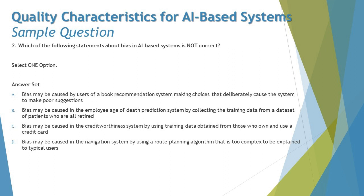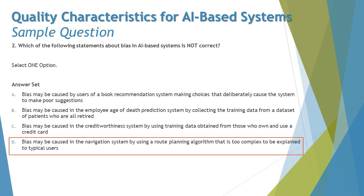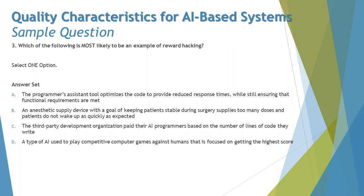Options A, B, and C are all true about bias, so we're left with option D. Option D says: bias may be caused in a navigation system by using a route planning algorithm that is too complex to be explained to a typical user. If the algorithm cannot be explained, it lacks explainability — but that does not mean it is biased or unbiased. Explainability and bias are different quality characteristics, so the right answer is D.